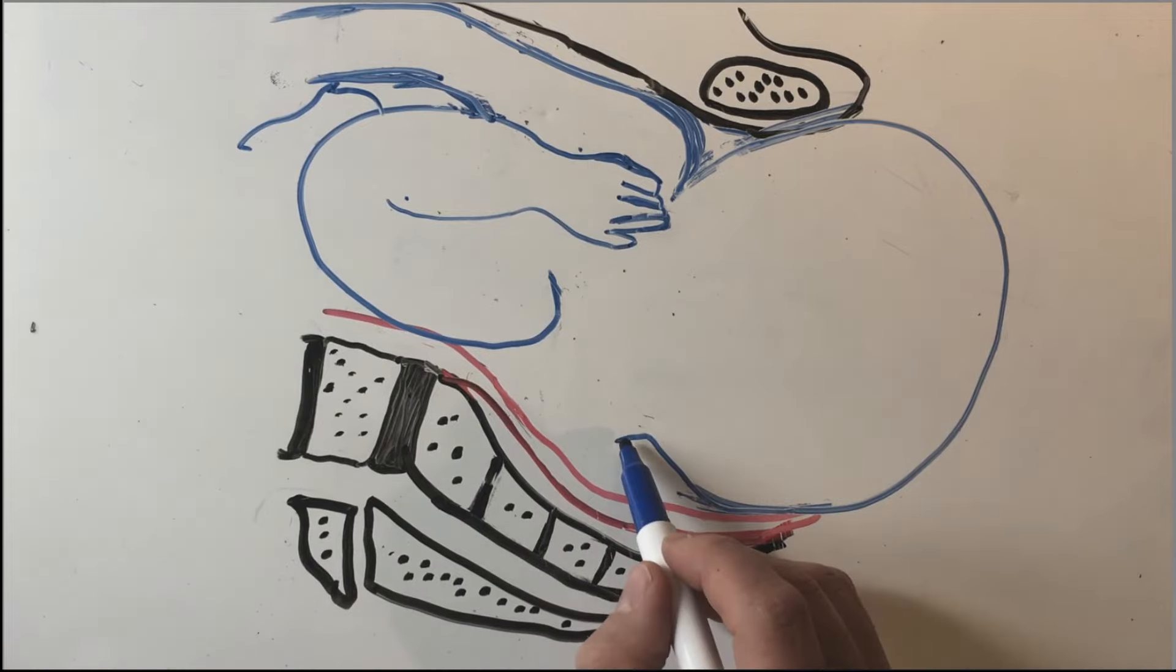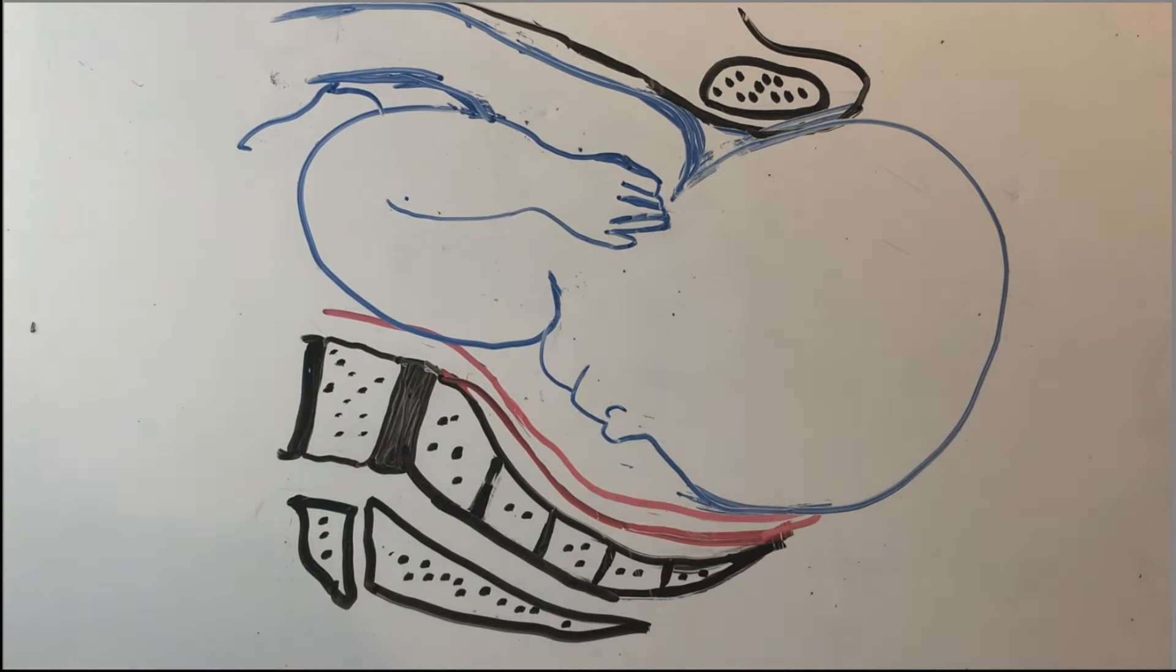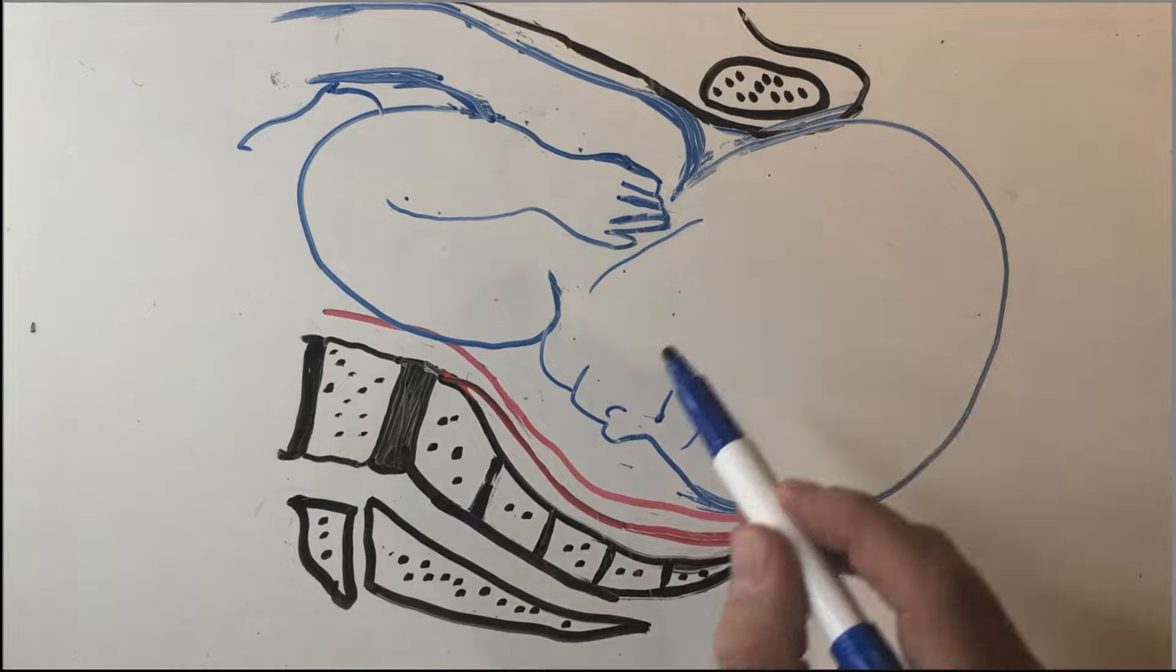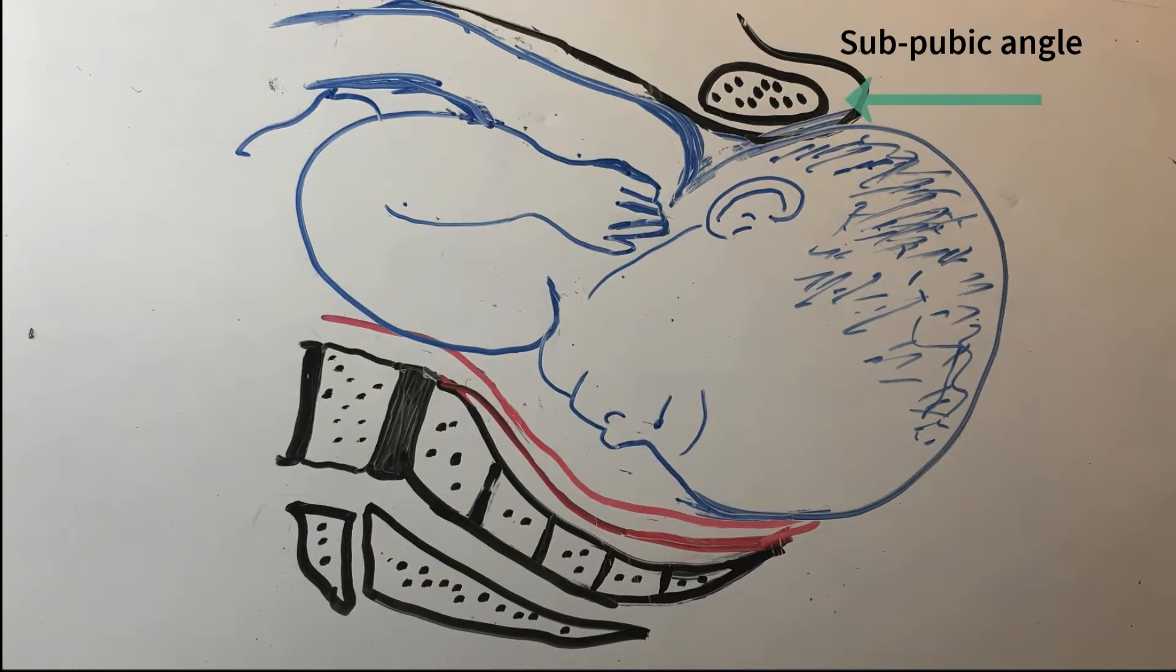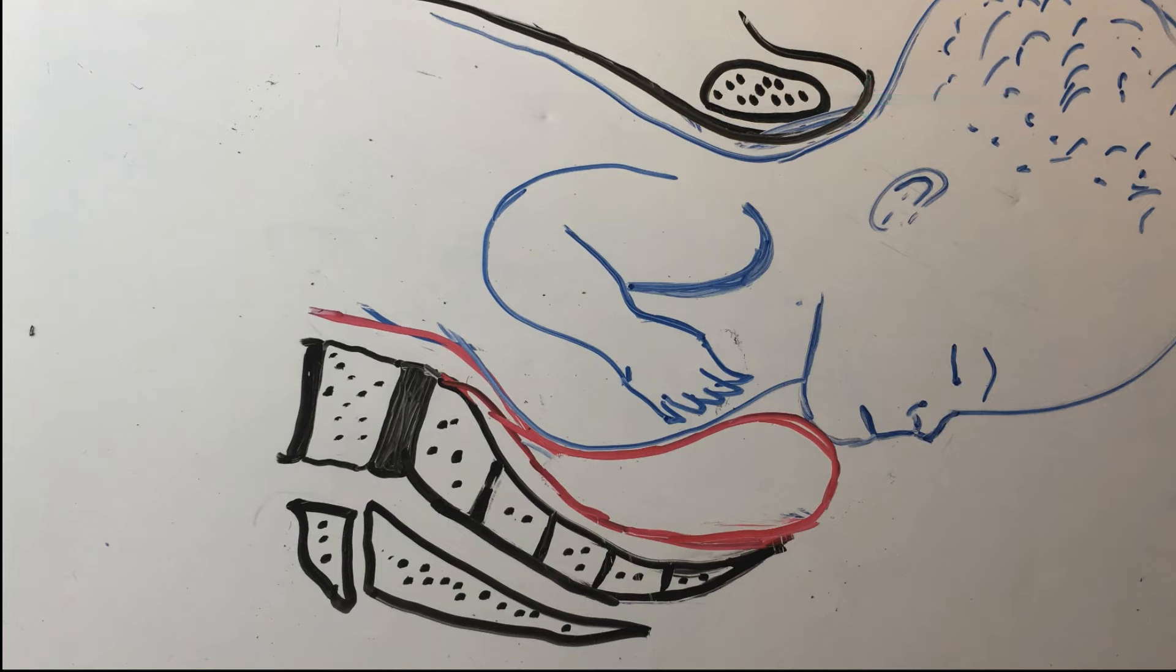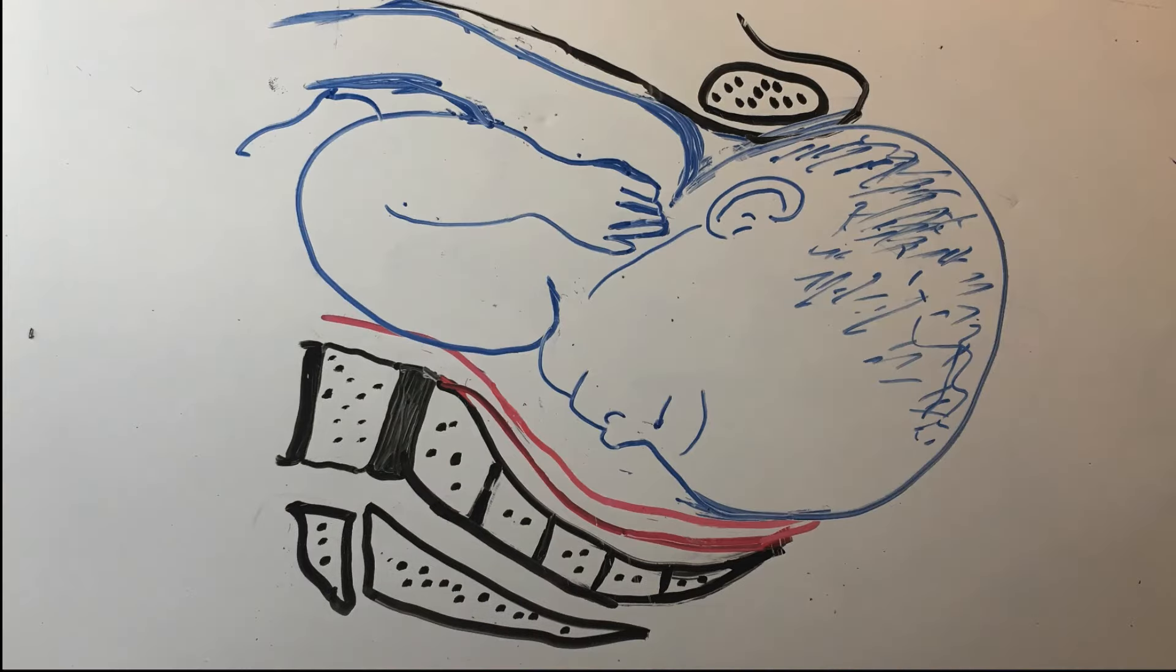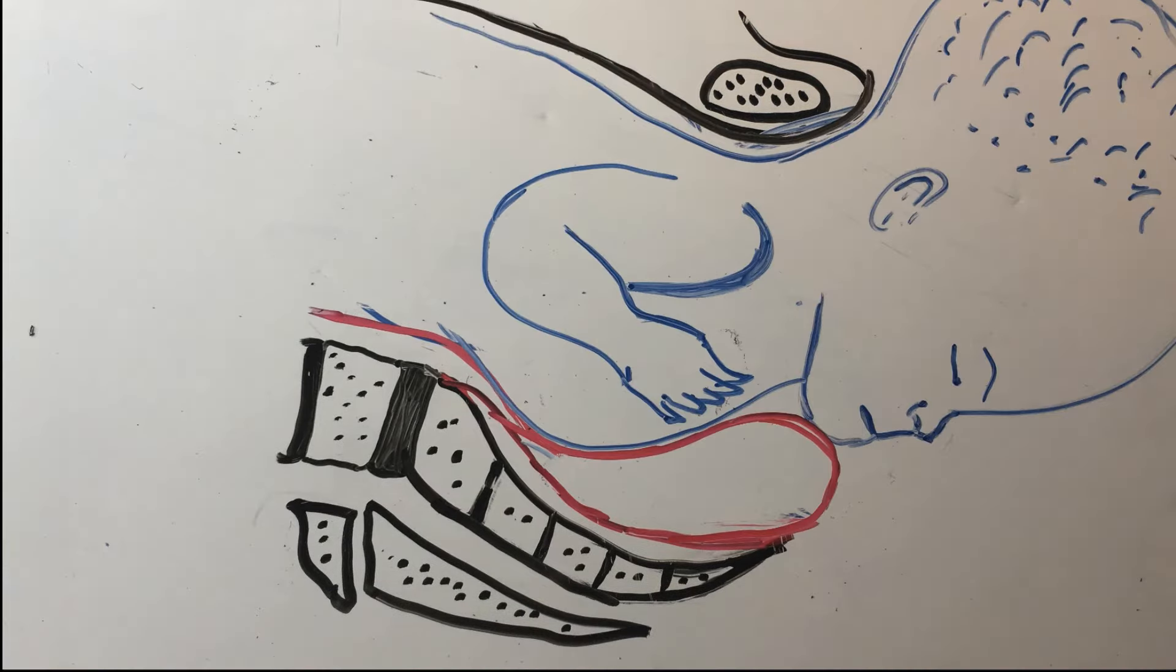In theory, cephalohematoma can occur across any of the cranial bones. However, it most likely occurs in the parietal bones. And double as likely to occur in the parietal bone that absorbs most impact as it slides underneath the maternal sub-pubic angle. In other words, the right parietal bone.